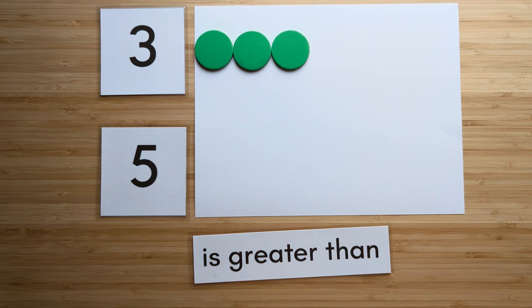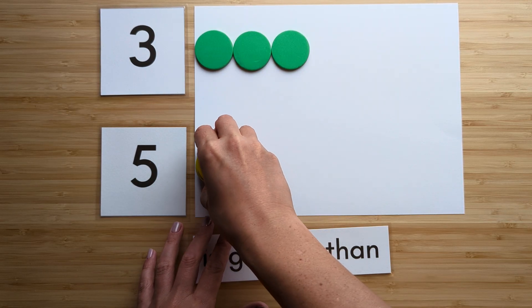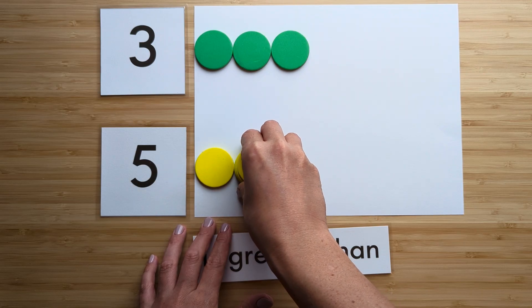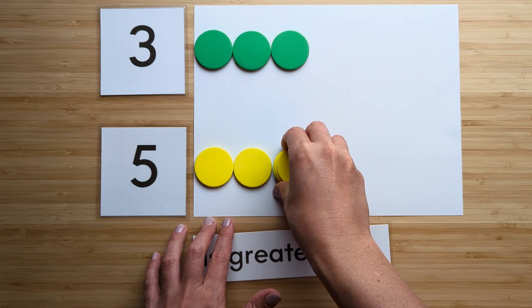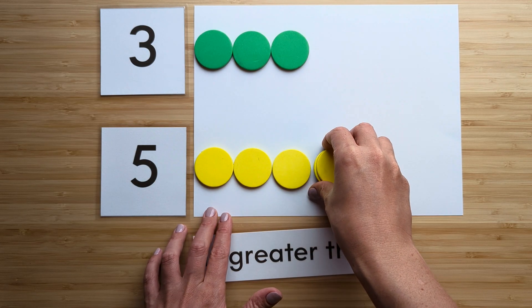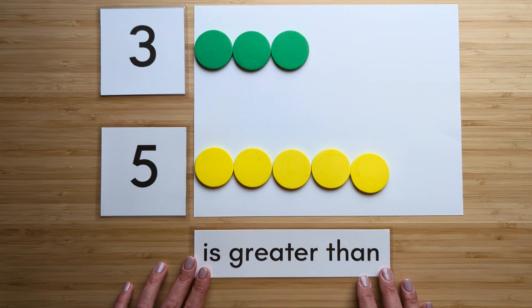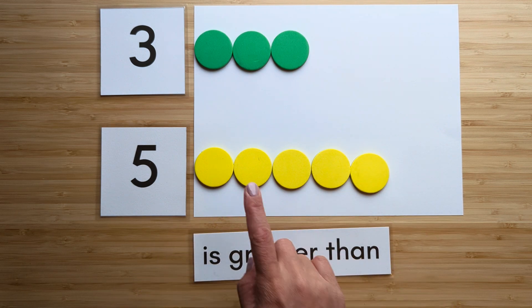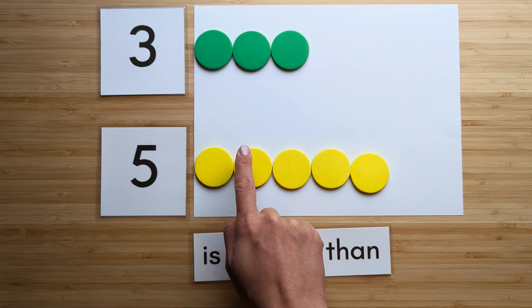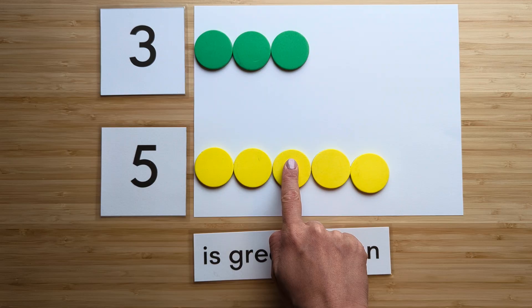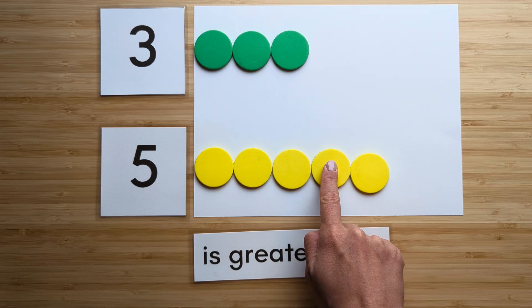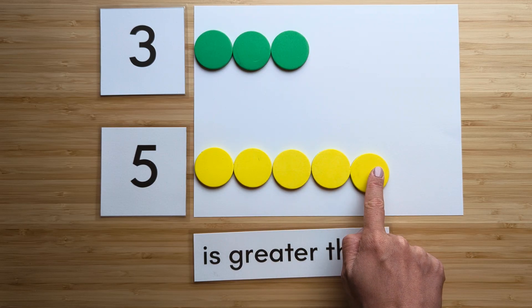Make the number five. Point and count: one, two, three, four, five.